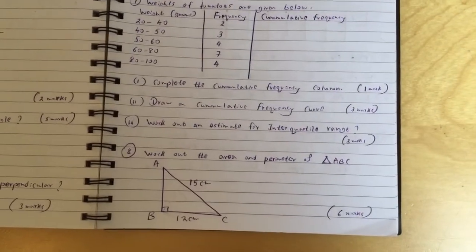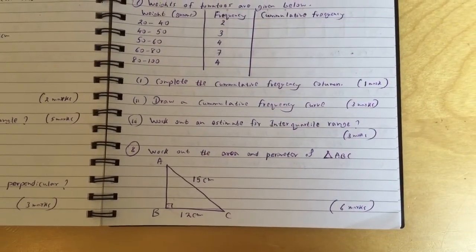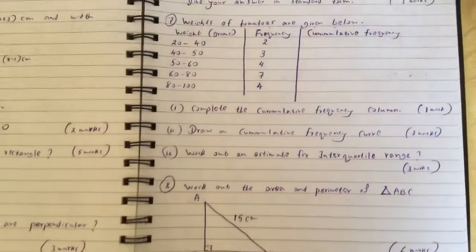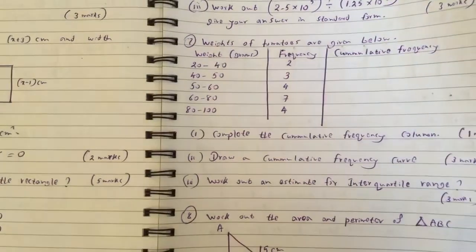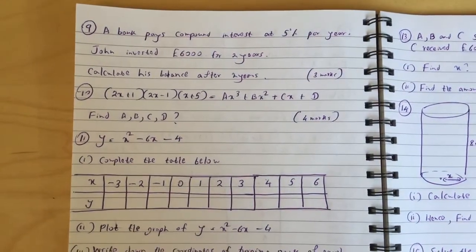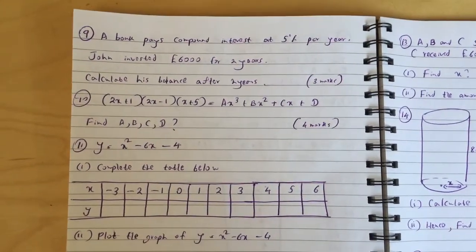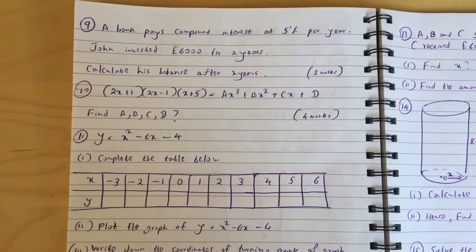Question 8: Work out the area and perimeter of triangle ABC. Question 9: A bank pays compound interest at 5% per year. John invested £6,000 for two years. Calculate his balance after two years.